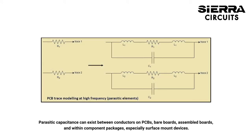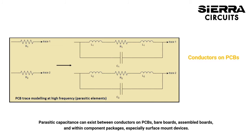Parasitic capacitance can exist between conductors on PCBs, bare boards, assembled boards, and within component packages, especially surface mount devices.